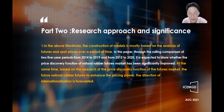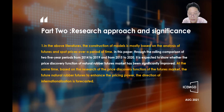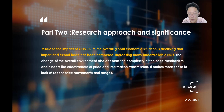The second part is the Research Ideas and Significance. In the above literature, the construction of models is mostly based on analysis of futures and spot prices over a single period of time. In this paper, through rolling compression of two five-year periods from 2014 to 2019 and from 2015 to 2020, it is expected to show whether the price discovery function of the Natural Rubber futures market has been significantly improved. Due to the impact of COVID-19, the overall global economic situation is declining and import-export trends have been hampered, increasing many uncontrollable risks. Changes in the environment also deepen the complexity of the price action mechanism and hinder the effectiveness of price and information transmission.